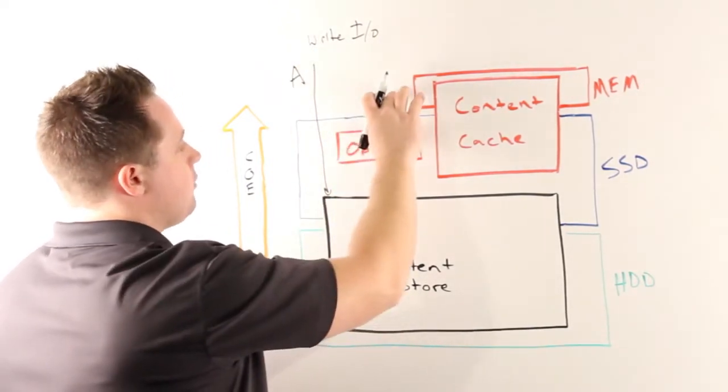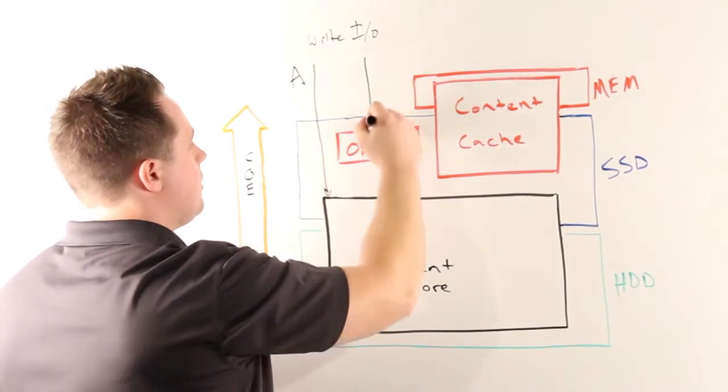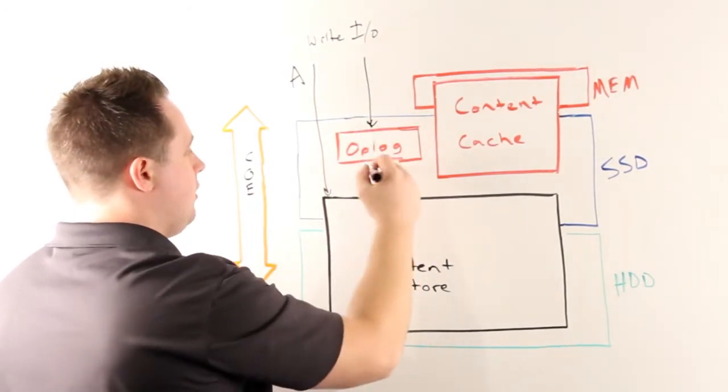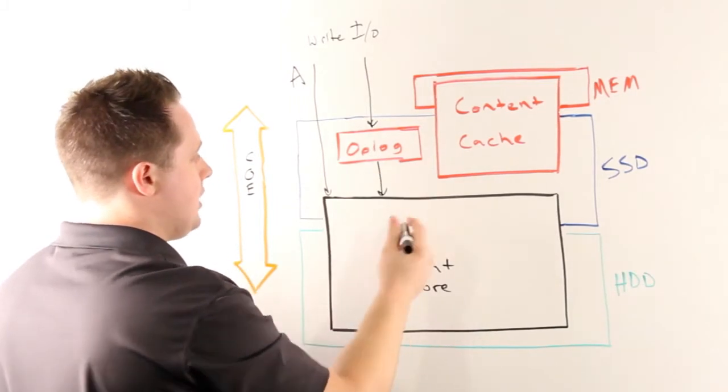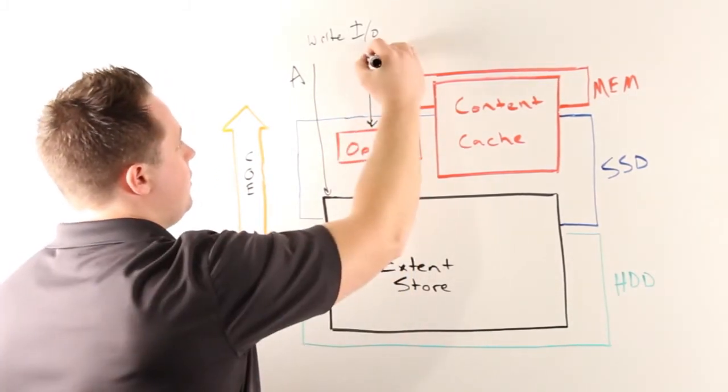Any random or small I/Os will be directly written to my op log, coalesced, and then asynchronously drained into my extent store. We'll call this B.